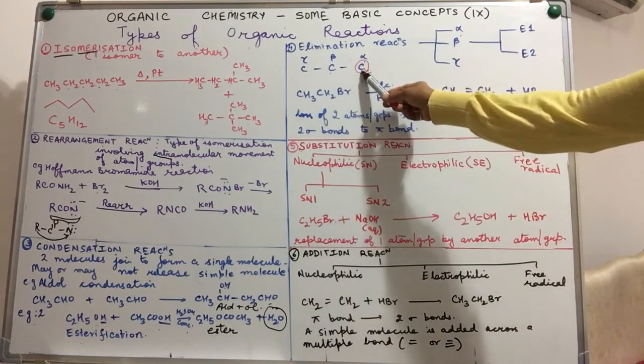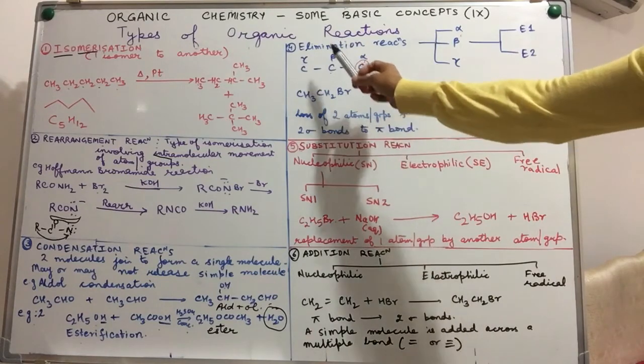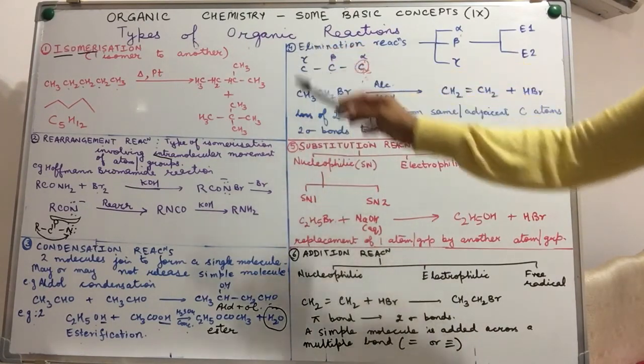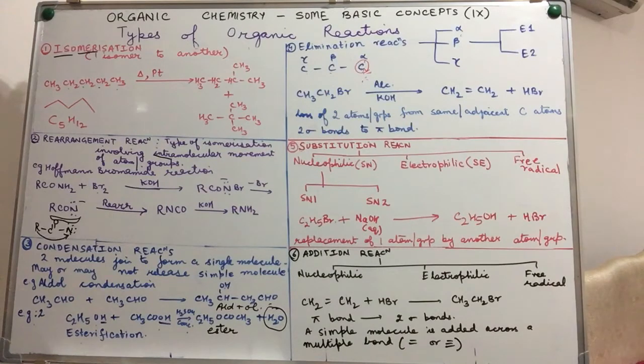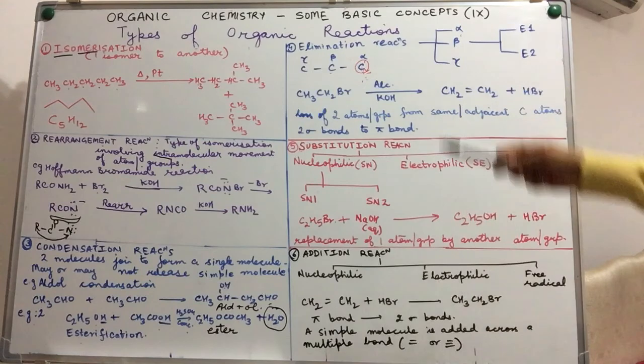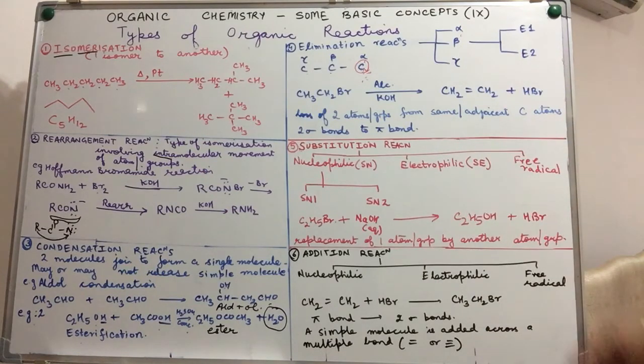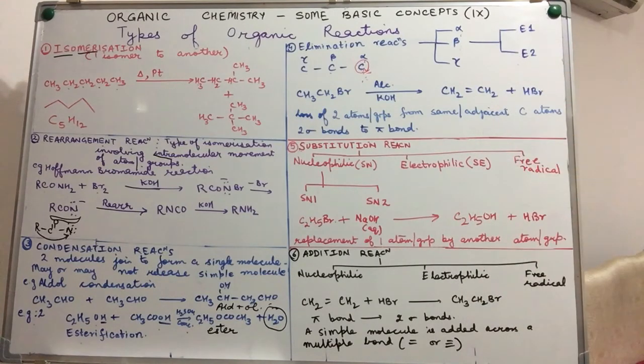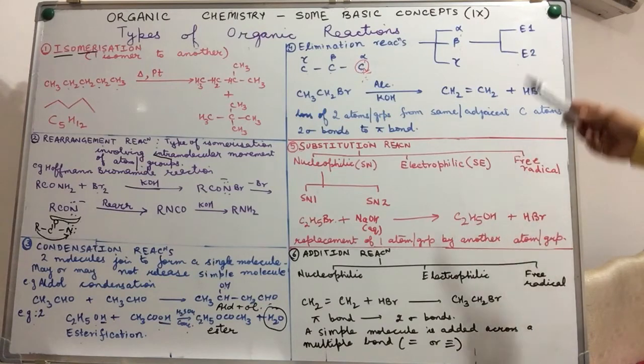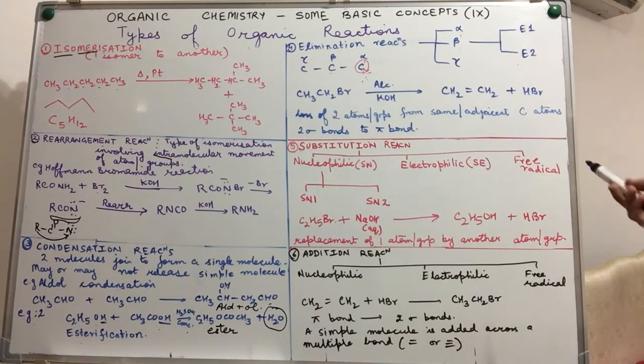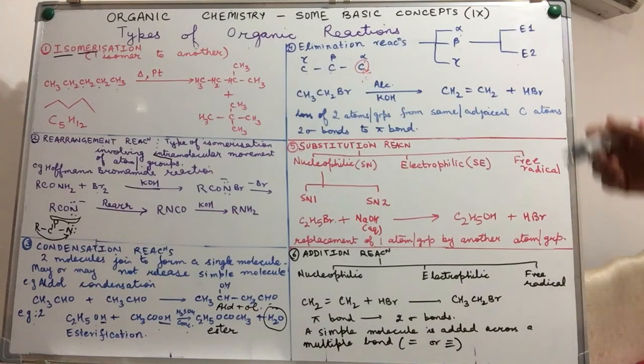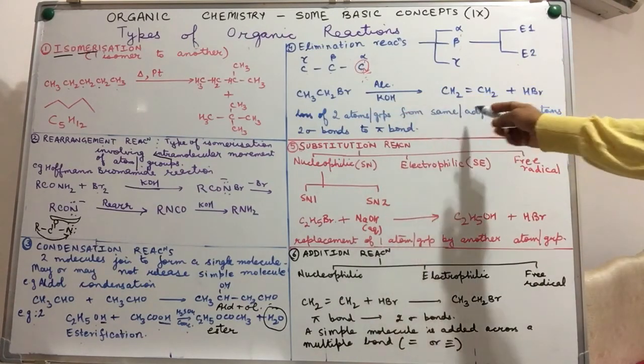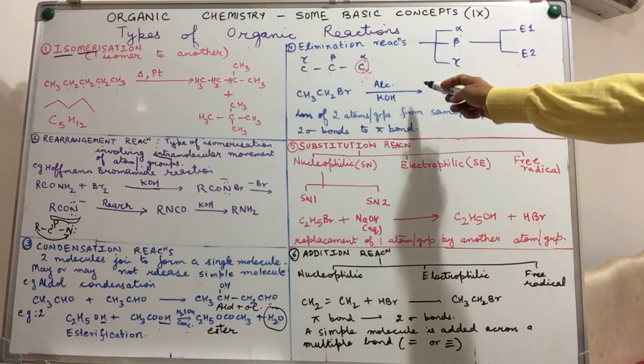Third possibility is we remove one atom from here, and the second atom or group is removed from the gamma carbon atom. In that case, it is called as gamma elimination. Beta elimination is further classified as E1 and E2. Unimolecular elimination, bimolecular elimination. What are each of these? We shall be studying as a separate heading to avoid too much confusion at this stage. So we have loss of two atoms or groups from the same or adjacent carbon atoms is what we call as elimination.